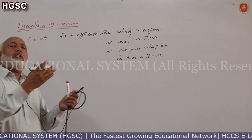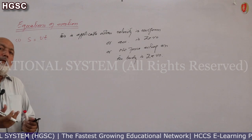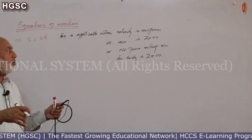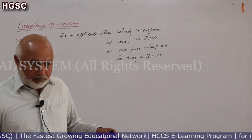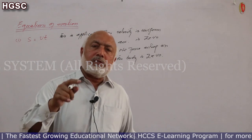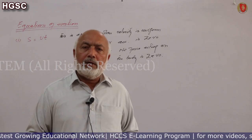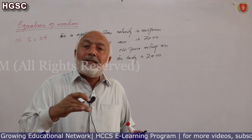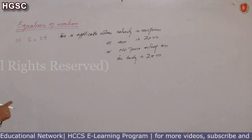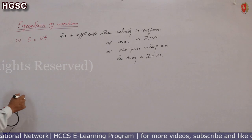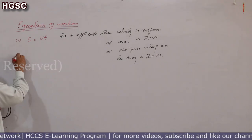Acceleration zero ka matlab hi yeh hai ke velocity uniform hai. Aur isi baat ko is tarah bhi interpret karte hain ke net force acting on the body is zero. Jab body pay net force zero ho to acceleration zero hoga, aur jab acceleration zero hoga to velocity constant hogi. Yeh equation usi waqt lagayi jati hai.